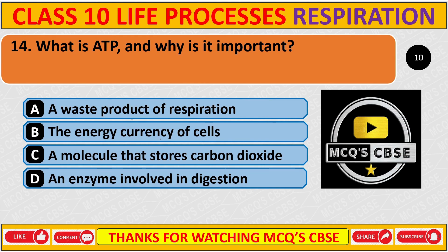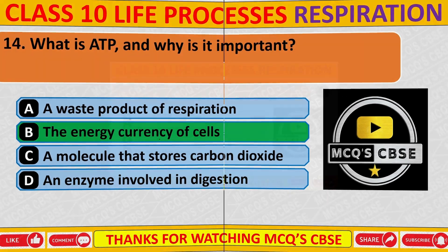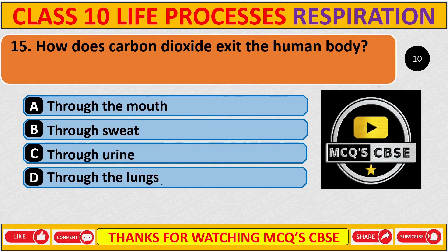Question 14: What is ATP and why is it important? Correct answer is B: The energy currency of the cell. Question 15: How does carbon dioxide exit the human body? Correct answer is D: Through the lungs.